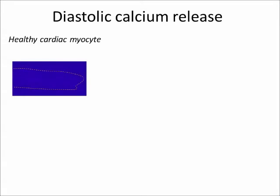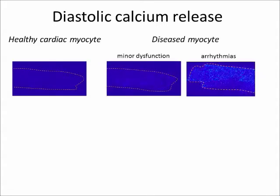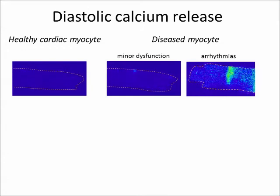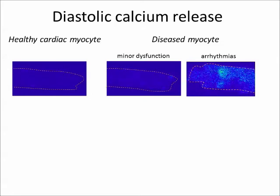diastolic calcium release in cardiac myocytes can be observed as relatively infrequent calcium sparks, here visualized as an increase in the fluorescence of the calcium-sensitive indicator FluO3. In cardiac diseases such as heart failure or in several inherited arrhythmias due to ryanodine receptor mutations, diastolic calcium release is increased and may lead to the appearance of calcium waves.